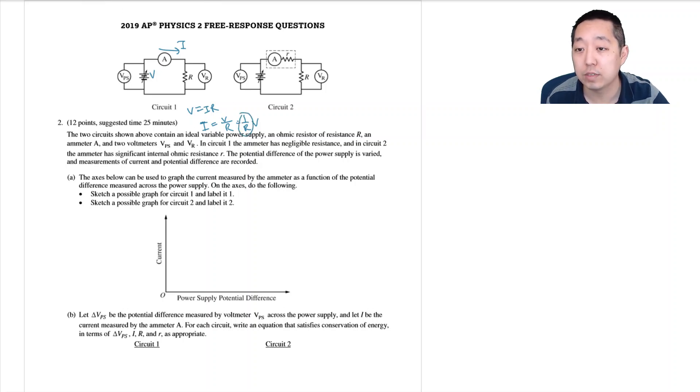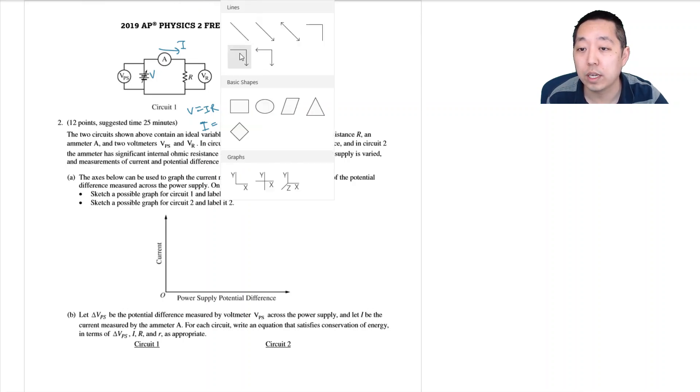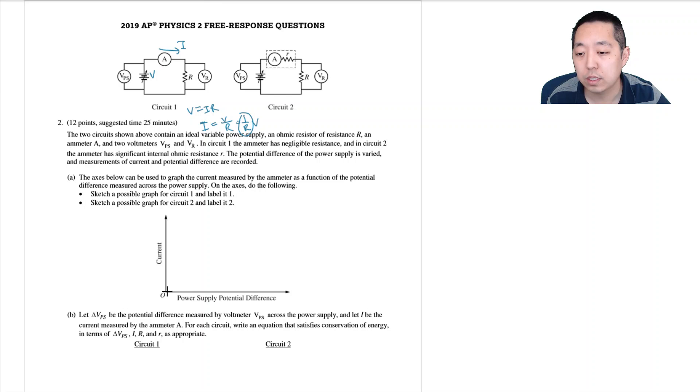So I'll have a line that has some kind of slope where the slope is inversely proportional to the resistance. I'll make it like that and I will move it so it should go through the origin technically. Okay that's not great. Imagine it went through the origin.